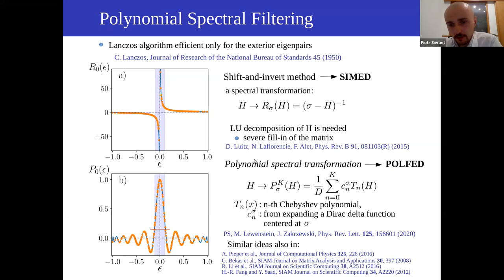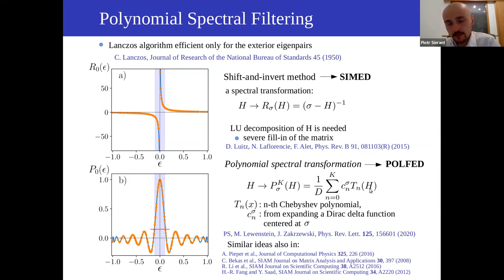To circumvent the problem of the shift-and-invert method, I consider polynomial spectral transformation, which is the basis of the POLFED algorithm. We perform a transformation of the Hamiltonian matrix using a high-order polynomial of the Hamiltonian that is very strongly peaked around certain eigenvalues in the middle of the spectrum. Since this is a polynomial of the Hamiltonian, acting with it on vectors reduces to multiple matrix-vector multiplications, which can be done efficiently while preserving the sparse structure.